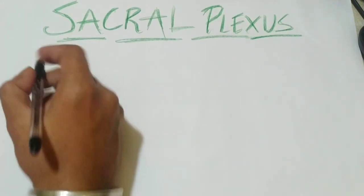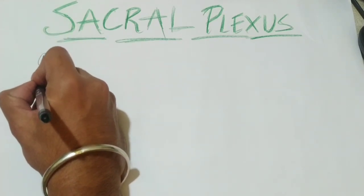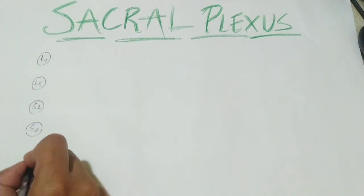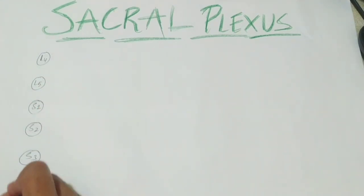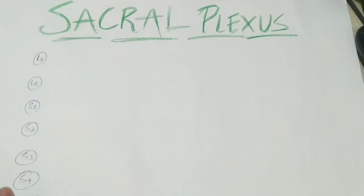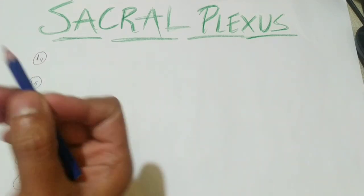I will mark the levels here: L4, L5, S1, S2, S3, and S4. In all these spinal nerves there are two divisions — a posterior division and an anterior division. I will first tell you the branches arising from the dorsal or posterior division.